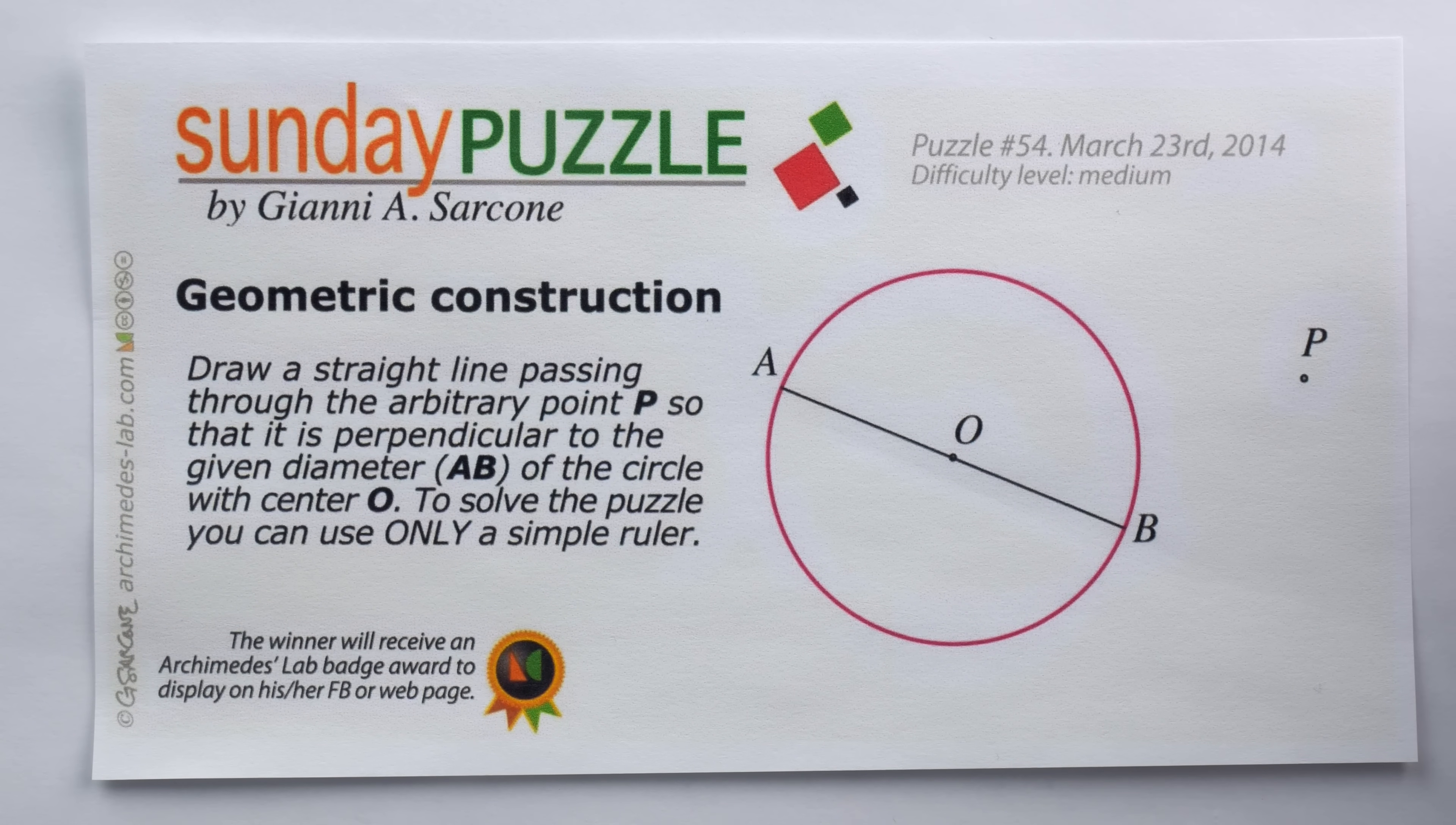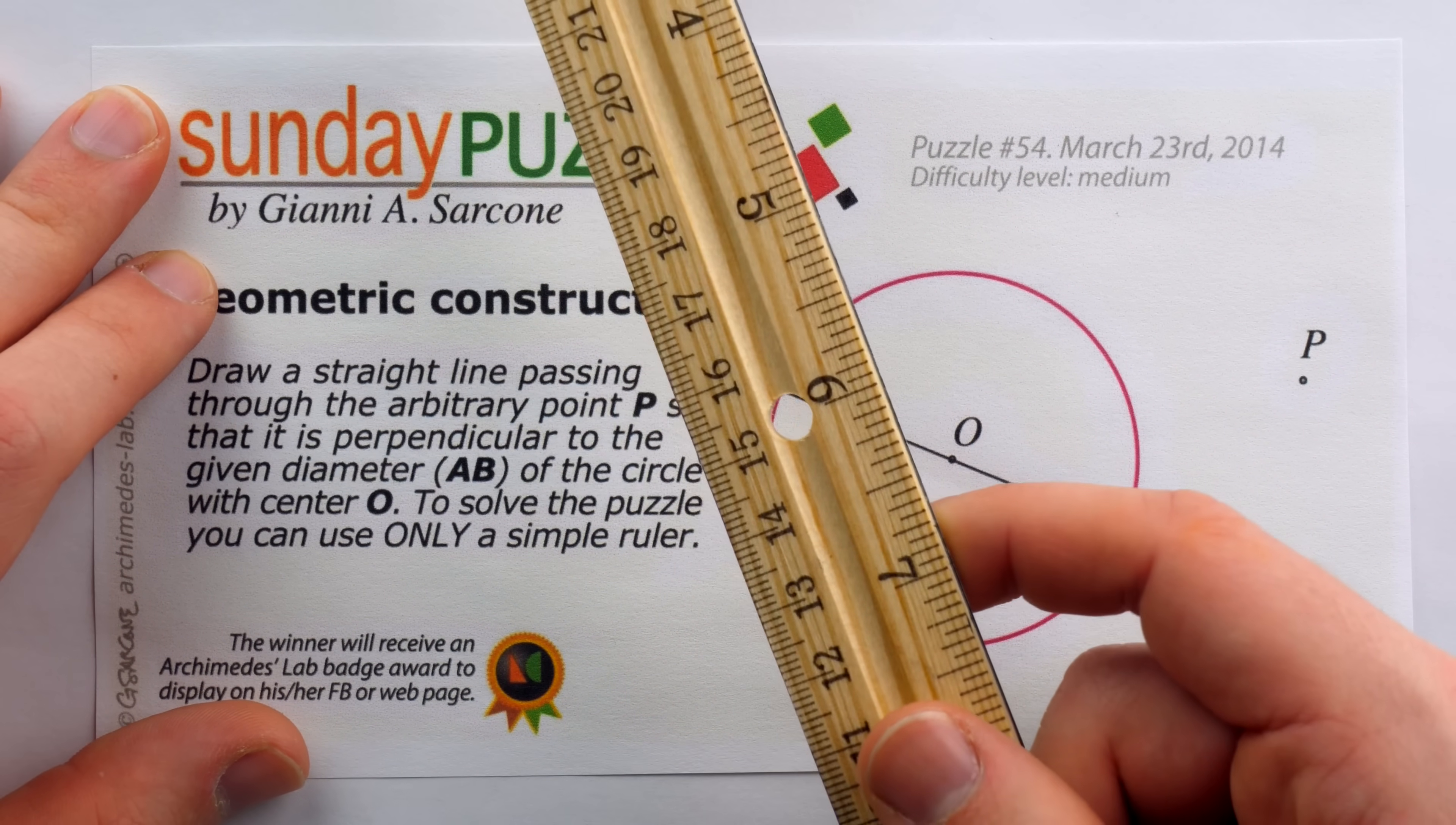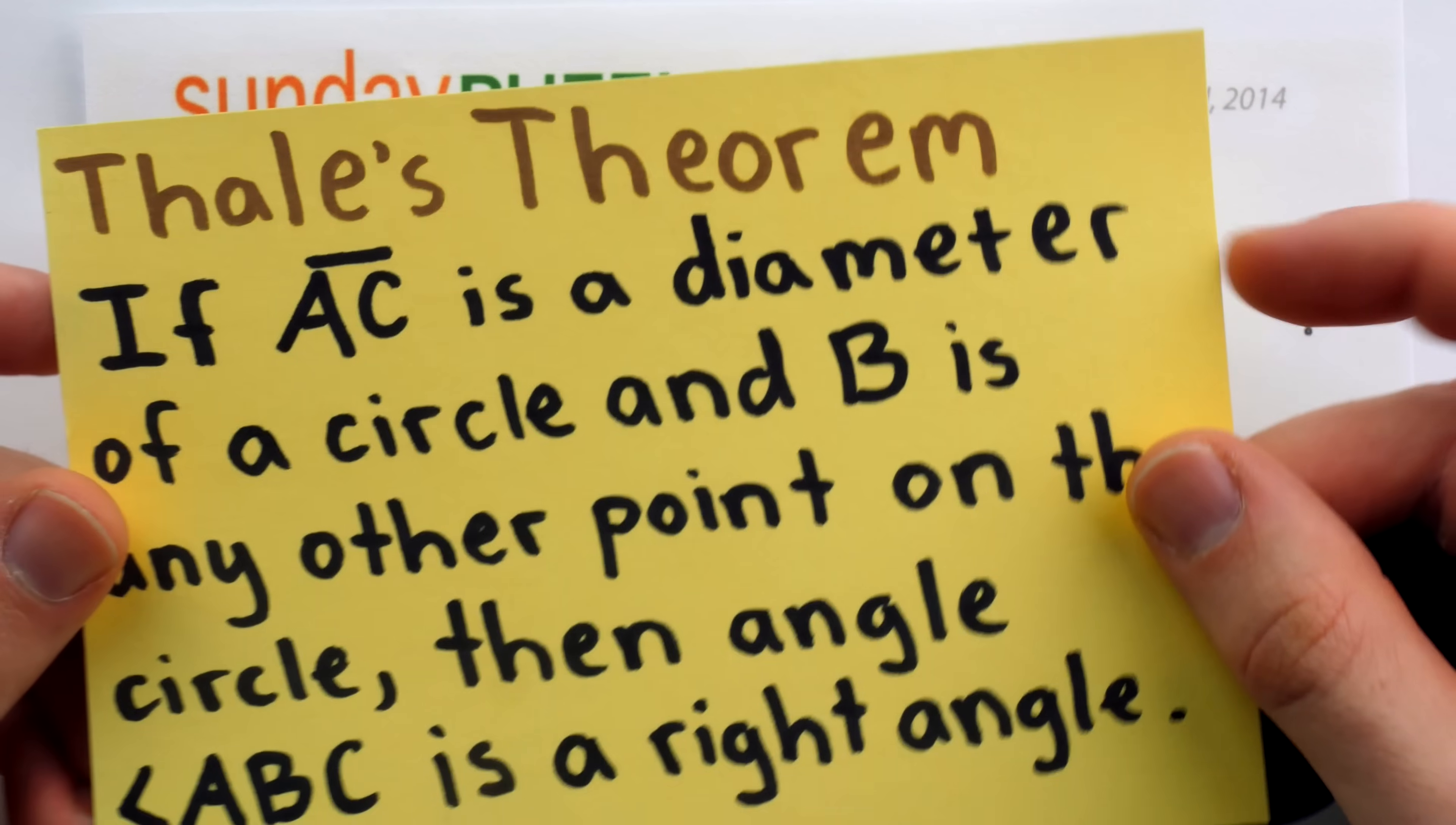You may want to pause the video now and try the puzzle yourself. See if you can find a way to construct a line through P that's perpendicular to AB using only a straight edge. If you want a hint, let me tell you the two main geometric results that we're going to use in our construction.